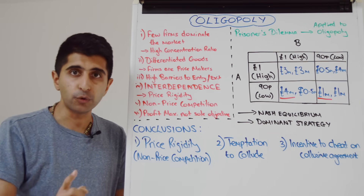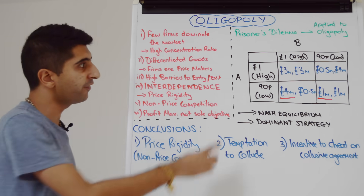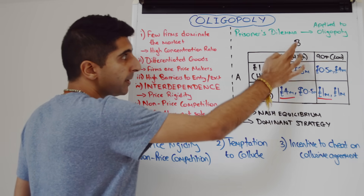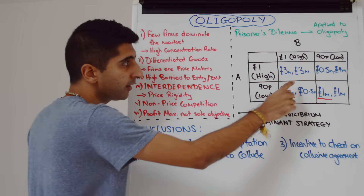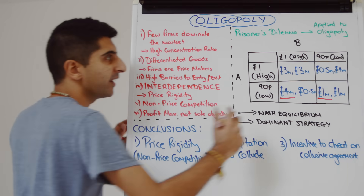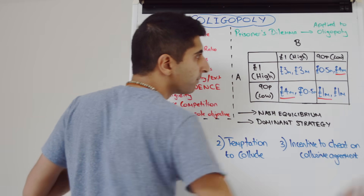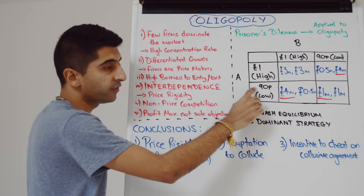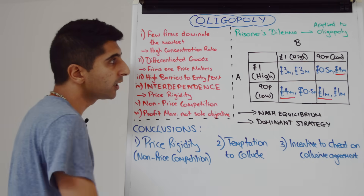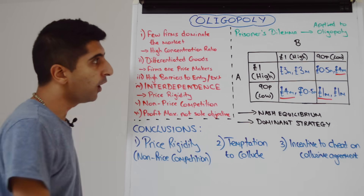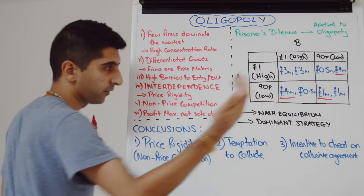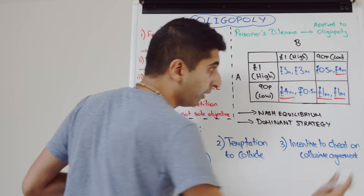What about firm B? What should firm B do? It depends on what firm A does. If firm A charges £1, firm B could react by charging the same price and earning £3 million, or they could undercut and earn £4 million — naturally, they're going to undercut. What if firm A chooses 90p? Firm B could charge the higher price and earn £0.5 million, or they could match and charge the low price of 90p and earn £1 million. Naturally, they're going to go for £1 million.